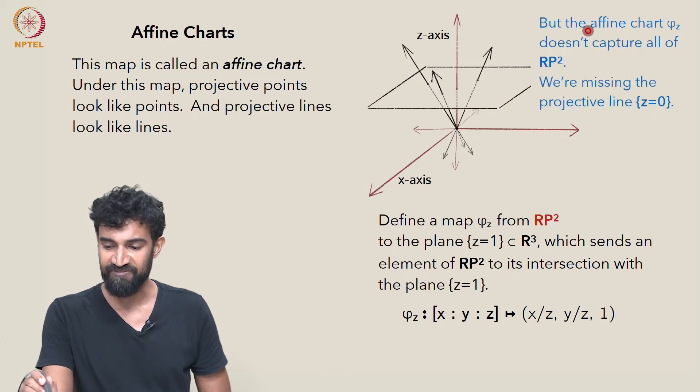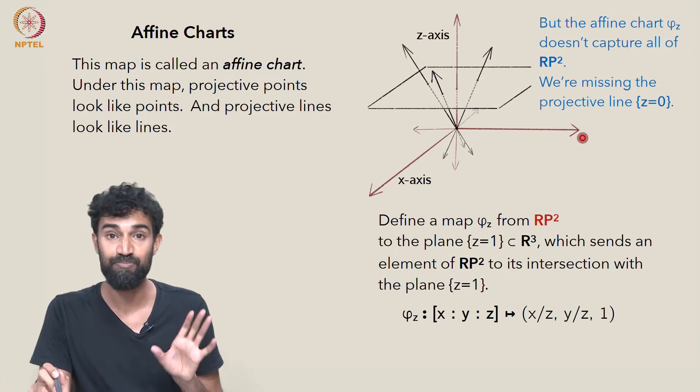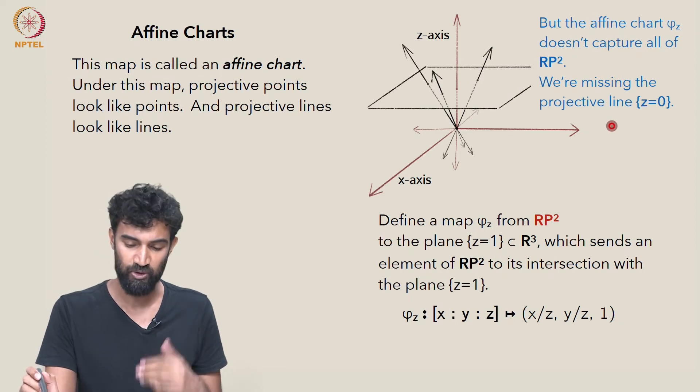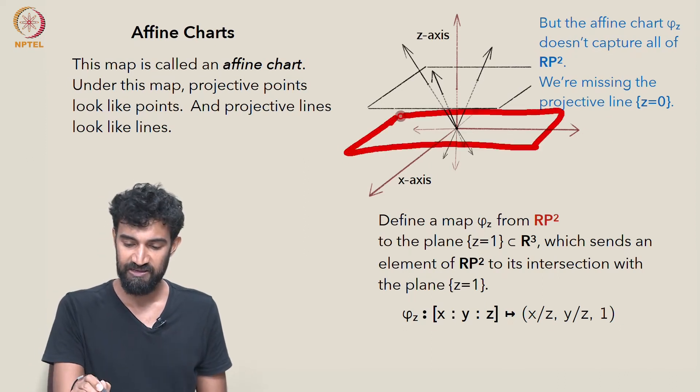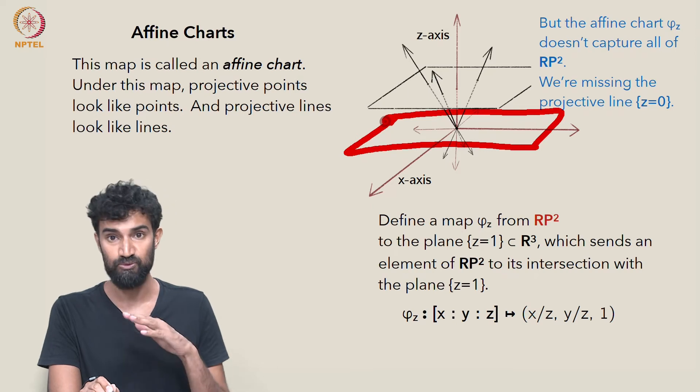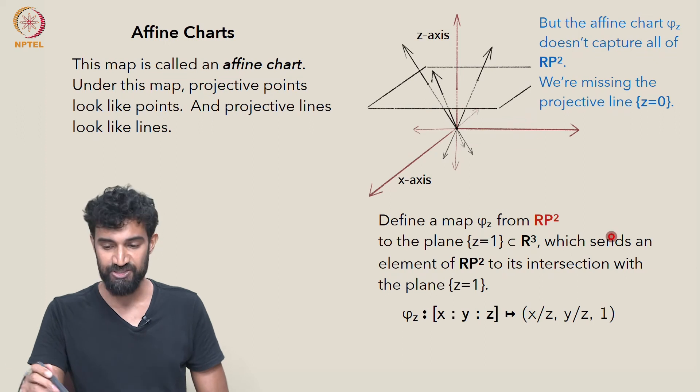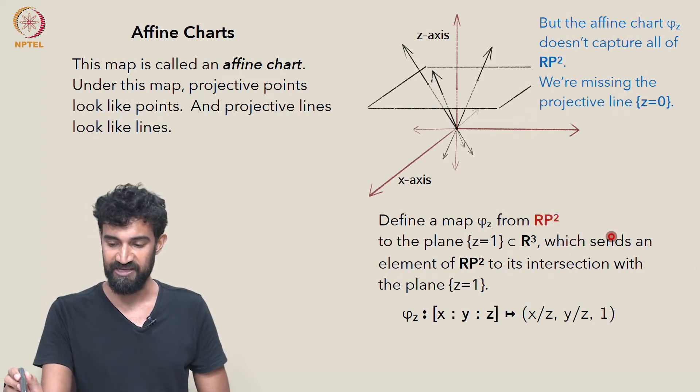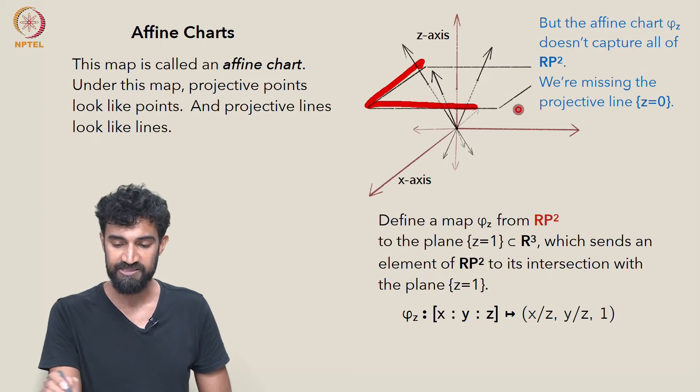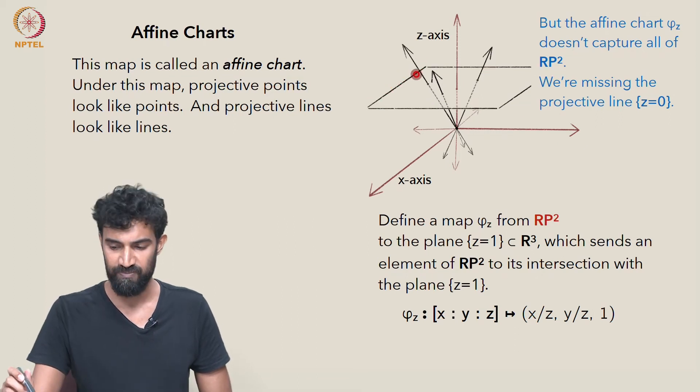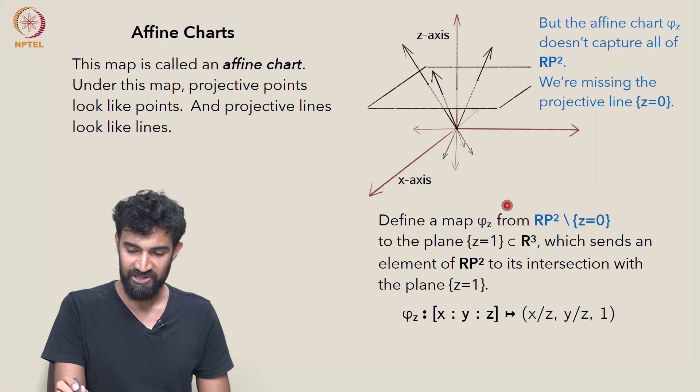But unfortunately, the affine chart doesn't actually capture all of RP². We're missing the projective line z equals 0. We're missing this projective line down here, z equals 0. None of the projective points in that line, none of the lines through the origin sitting on this plane z equals 0, are going to intersect the plane z equals 1.